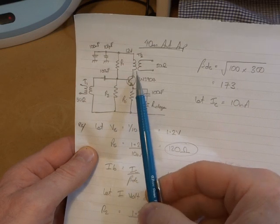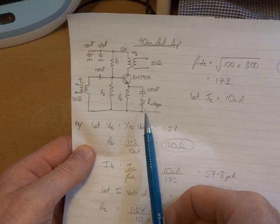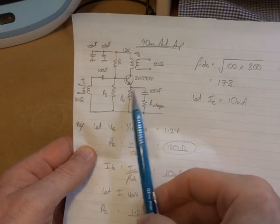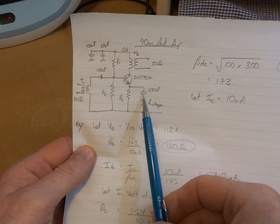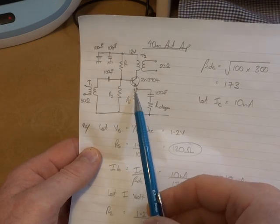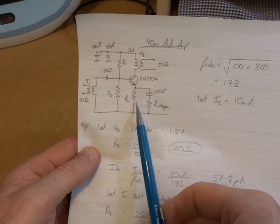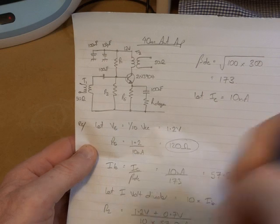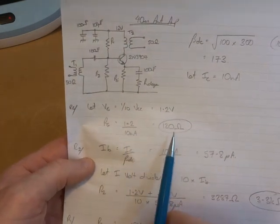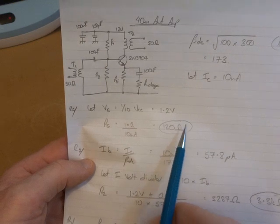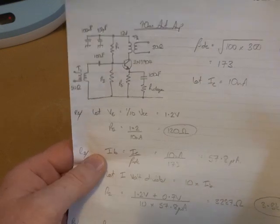We know that there's 10 milliamps flowing through there. There's nothing flowing from DC point of view through here, because we have a DC blocking capacitor at 100 nanofarads. So therefore, if we know the voltage, we know the current, then we can use Ohm's law to work out what that resistor is going to be. So 1.2 volts divided by 10 milliamps comes out at 120 ohms standard value, so I'll use that.